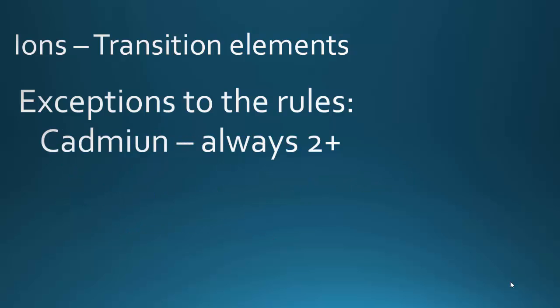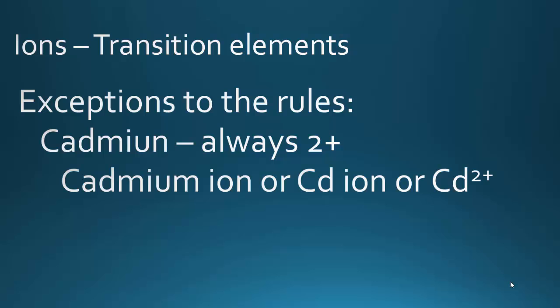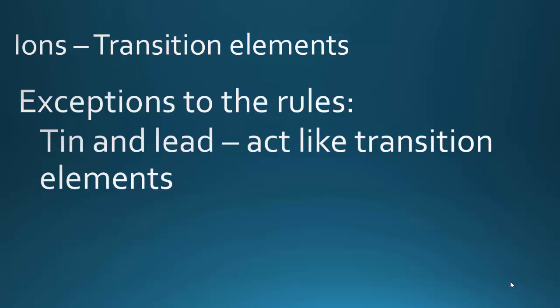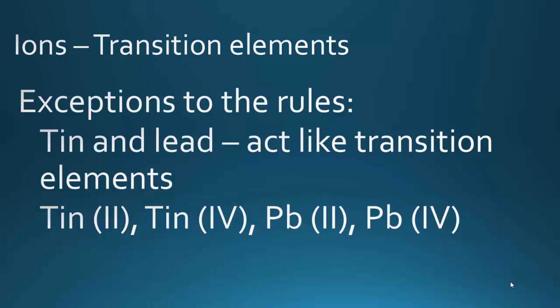You don't need to write it in this form. The third and final exception to the transition metal rules is cadmium. It's always 2+. So it's the cadmium ion or Cd ion or Cd²⁺. You don't need the Roman numerals. But just to make life difficult, there is an exception to the rules regarding the representative elements. Tin and lead act like transition elements. You can have tin two, tin four, lead two, or lead four. And I recommend you put these exceptions onto your index card.